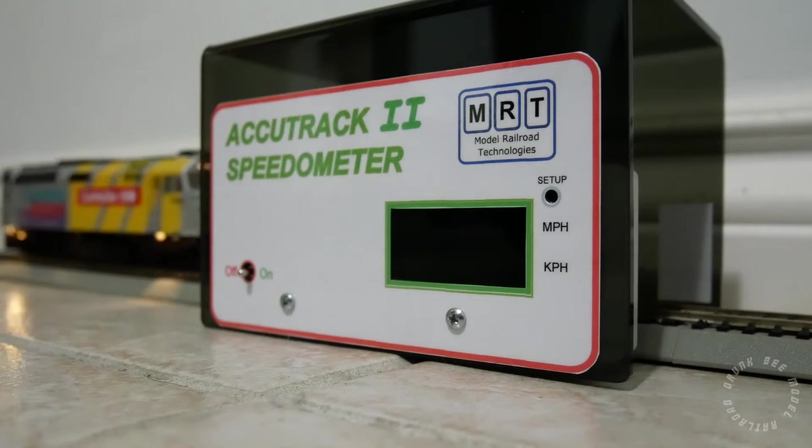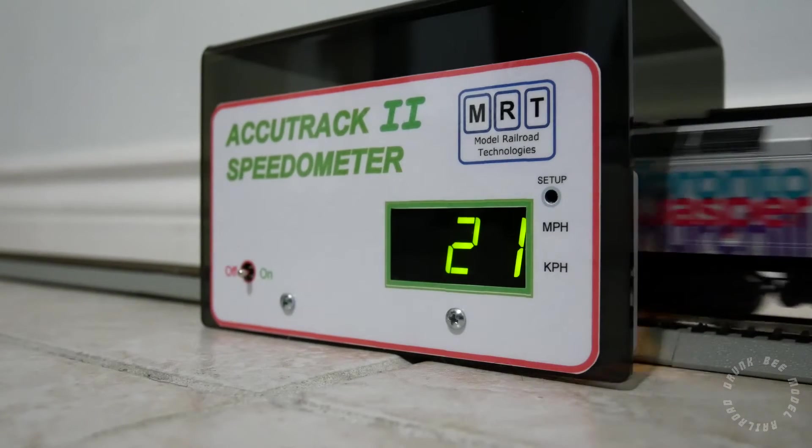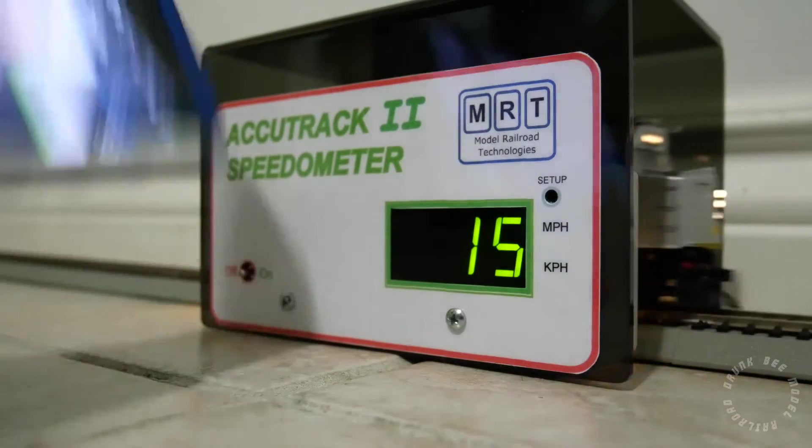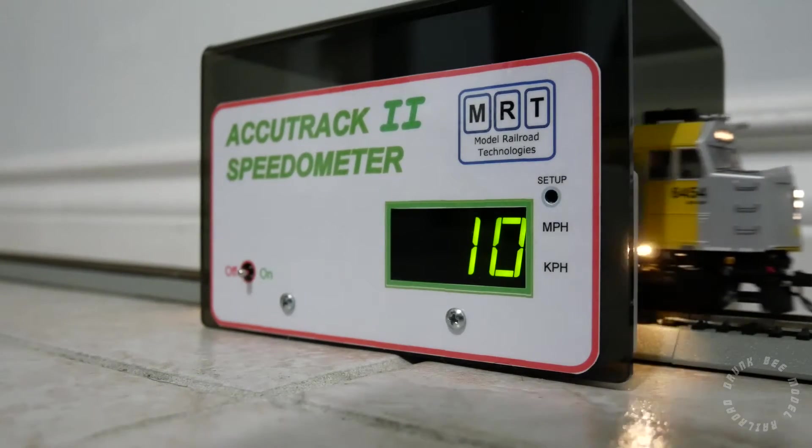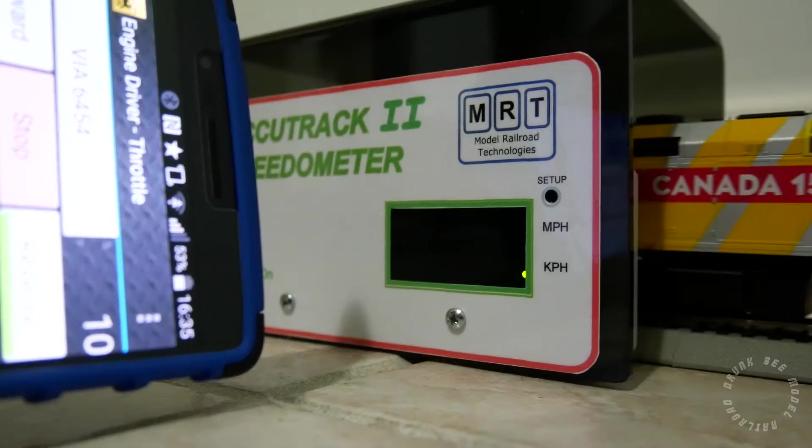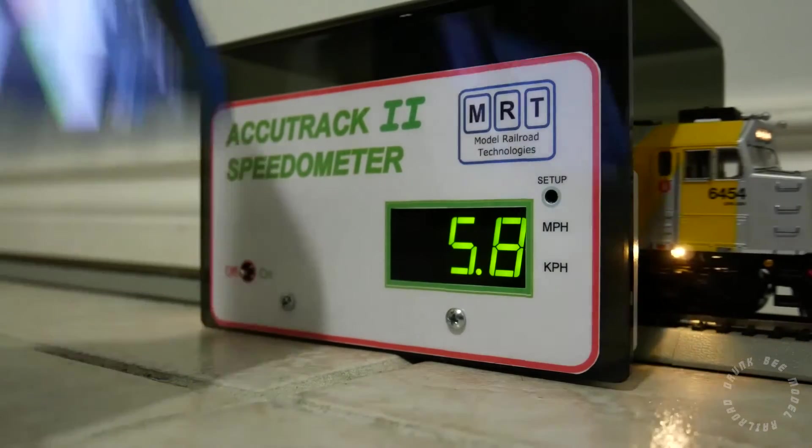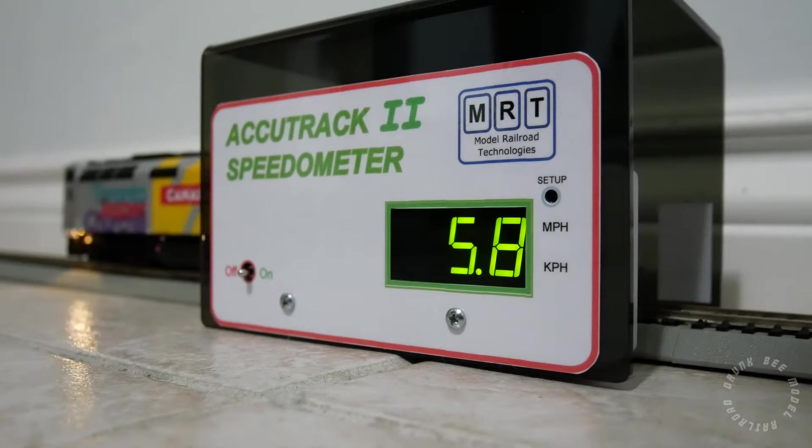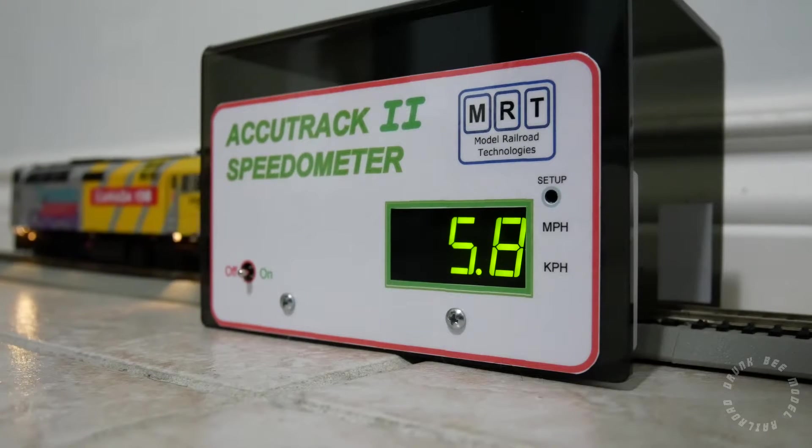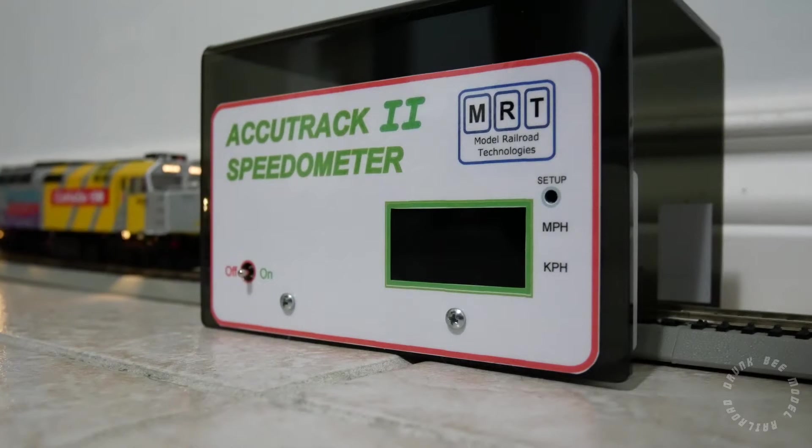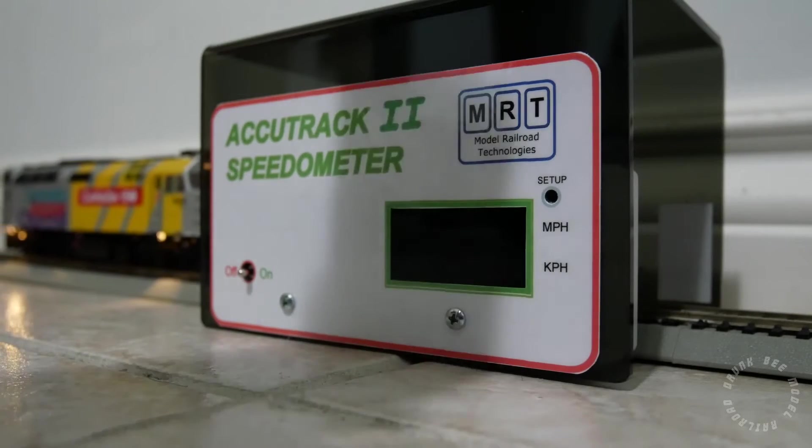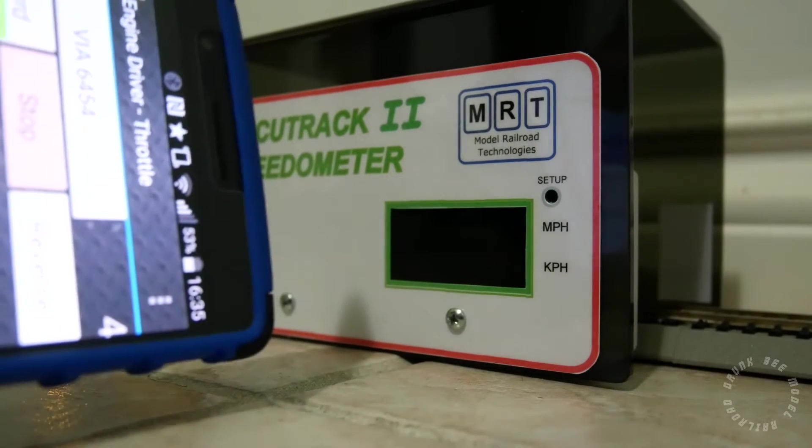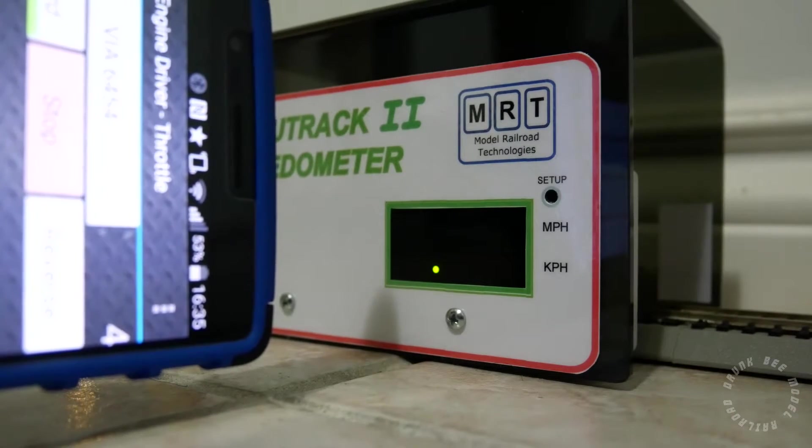40% corresponds to 20 scale miles per hour. 30% corresponds to 15. 20% corresponds to 10, and 10% corresponds to 5. The speed calibration does not have to be perfect on a dot. I generally find that a one scale mile difference to be perfectly acceptable, and it won't cause operational problems.